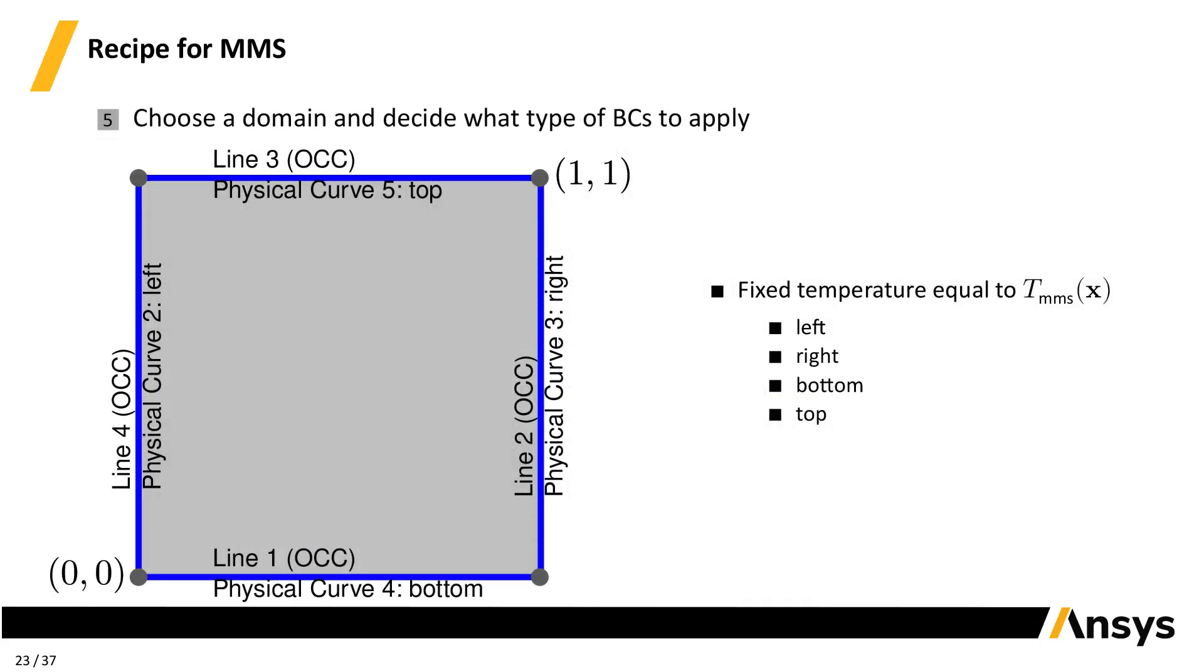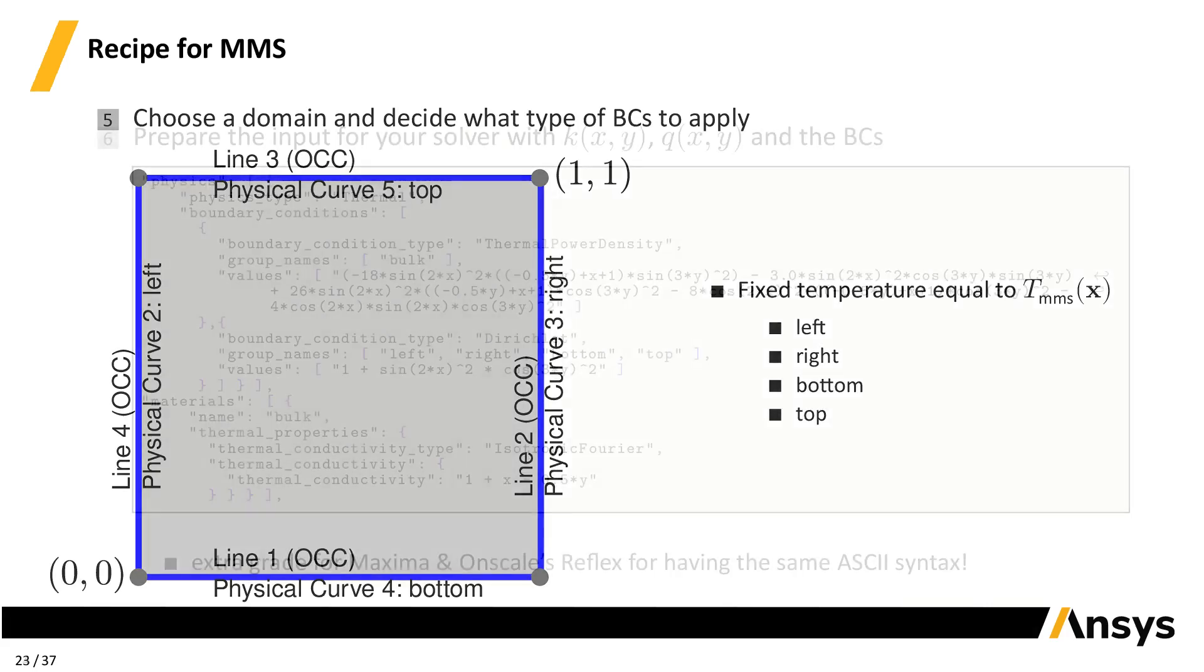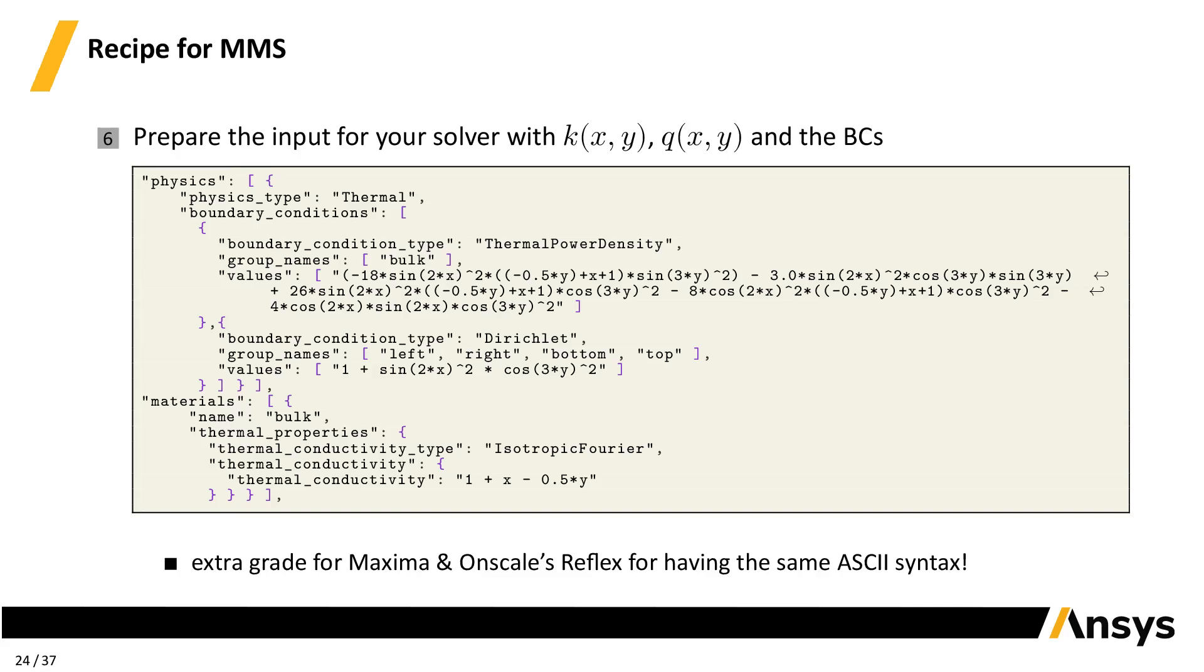5. Choose a domain and decide which boundaries will have essential conditions and which will have natural conditions. It's easier to start with Dirichlet only, so that's what we do for now. That's why we were good before with just the source term. 6. Prepare the input for your solver with the conductivity, the volumetric source, and the boundary conditions. In this case, we are using OnScale's reflex solver, which has a JSON input. We define a thermal power density equal to the expression for the source that MMS gave. For the boundary conditions, we evaluate the manufactured solution. Remember to give the expression for the material conductivity as well.